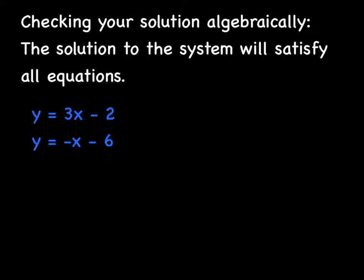Now we just solved that set of equations, the system of equations, by graphing. You can also always check your solutions algebraically, and the solution to the system will always satisfy both equations. We just said that the solution was (-1, -5). So all we have to do is plug in -5 for y. So -5 = 3(-1) - 2. So -5 = -3 - 2.